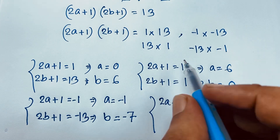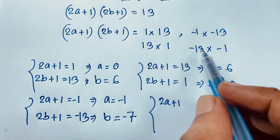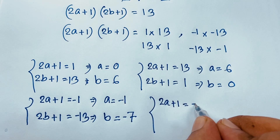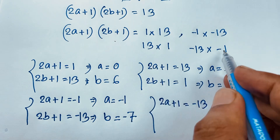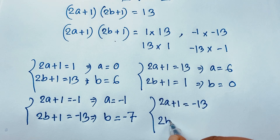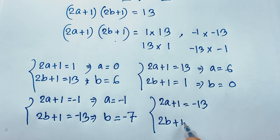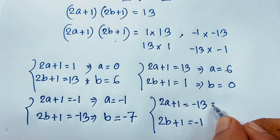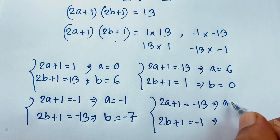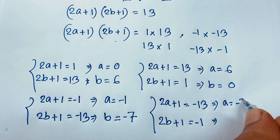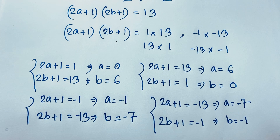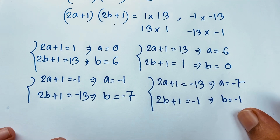Case 4: 2a + 1 = -13 and 2b + 1 = -1. So a = -7 and b = -1.